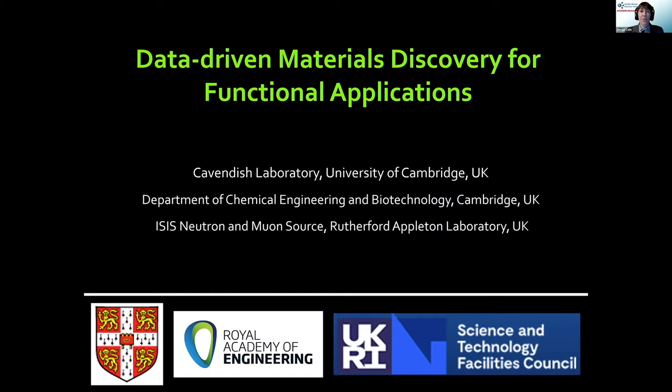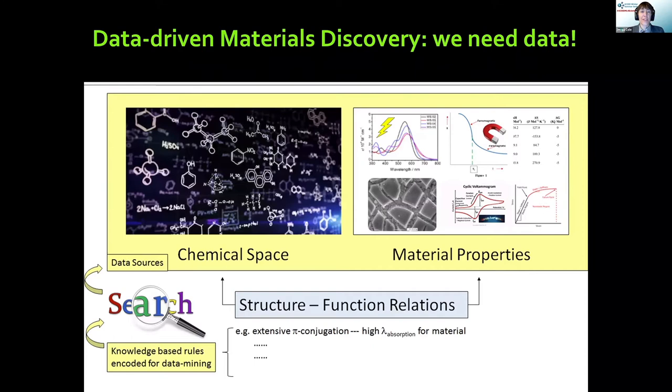Thank you very much for the invitation to give a talk today. I'm going to be talking about data-driven materials discovery. Stating the obvious quite deliberately: data-driven materials discovery needs data. Ideally you would want to have the entire universe of all possible chemicals that could ever exist, and for each of those chemicals have their cognate material properties, because there's an inherent link between the structure and property of a material which gives rise to patterns in data that you can use to predict new materials for a given application.